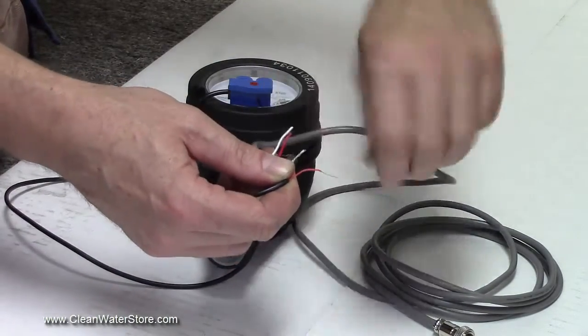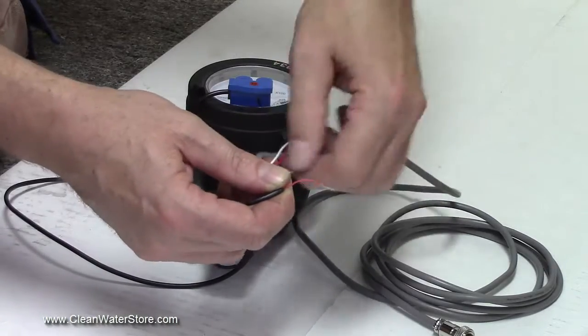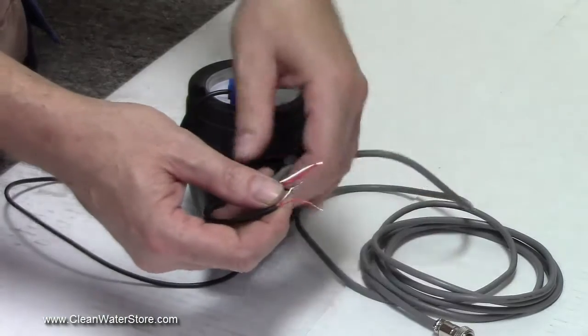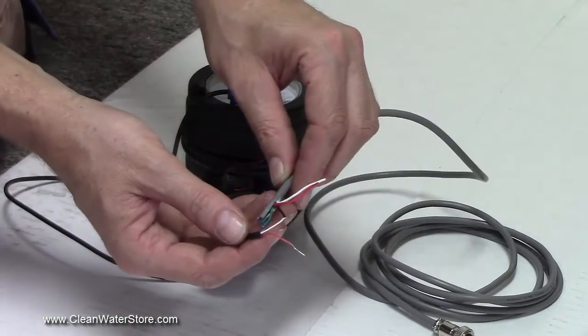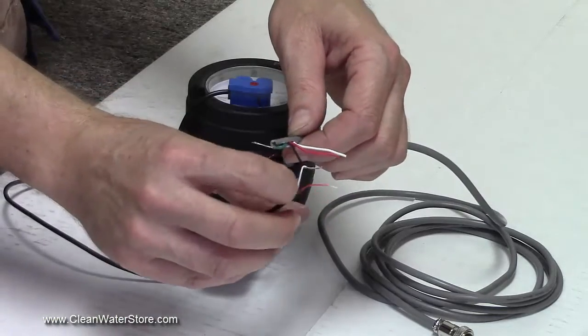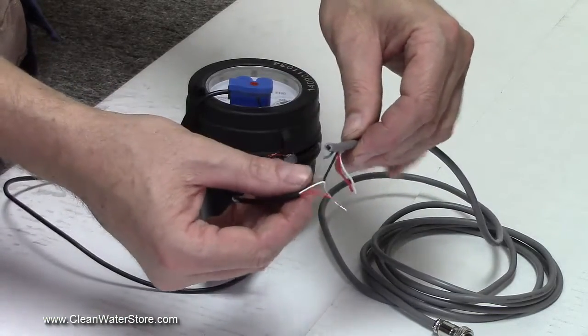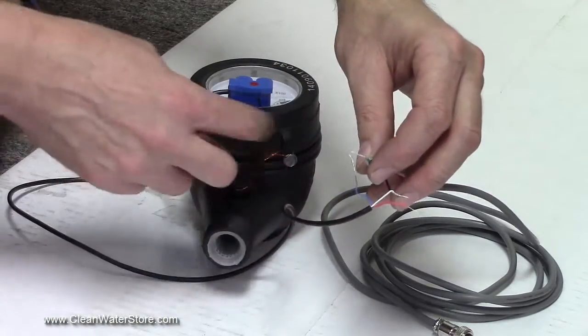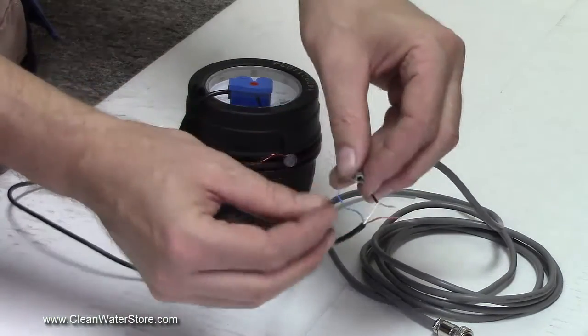We have the black to the white, and then we need the green to the blue. The green is from the metering pump, the Precision 24 yellow pump, and the flow meter is the blue. So green to the blue, and you're gonna have the white to the black and the green to the blue.